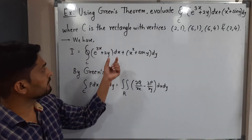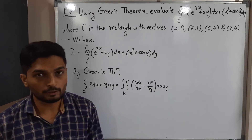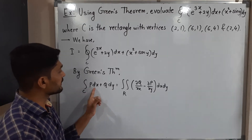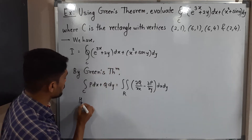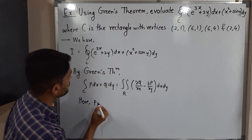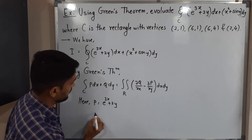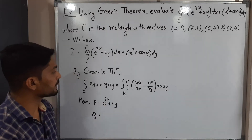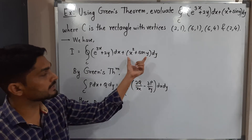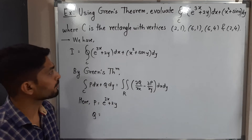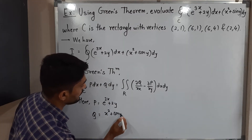Let us compare the given line integral with the left-hand side of Green's theorem, so we can easily identify P and Q. P is the coefficient of dx, which is e^(3x+2y). And Q is the coefficient of dy, which is x² + sin y.